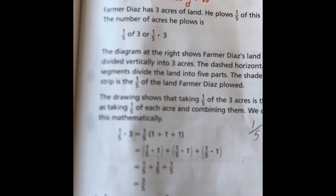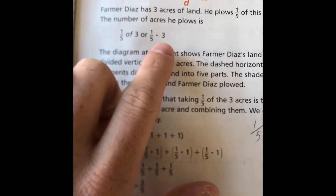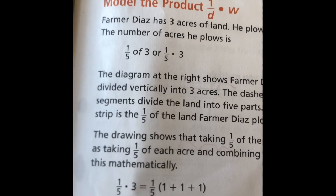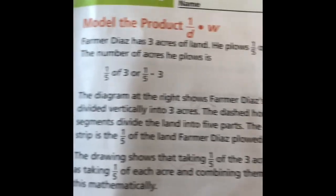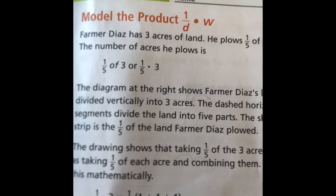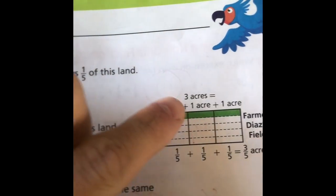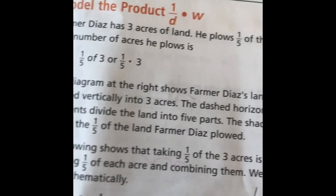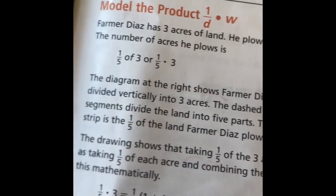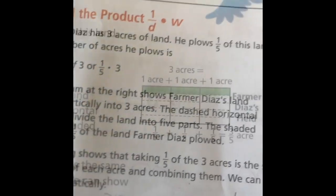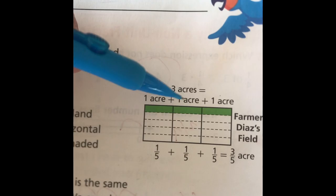We're going to be multiplying the fraction one-fifth by three, the whole number. The diagram the example uses is an area model. With the area model, Farmer Diaz's land is divided vertically into three acres, so that would be the three boxes right here. The dashed horizontal segments divide the land into five parts, and the shaded strip is one-fifth of the land. The example breaks the acres into three columns right here.